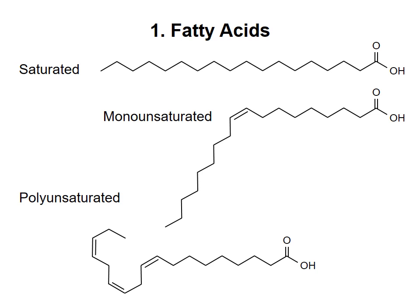Although chemists count the carbons in a fatty acid from the carboxylic acid end, in nutrition literature the carbons are often counted from the methyl, or CH3, end. This terminal carbon can be referred to as the omega carbon, and a fatty acid with a double bond three carbons from the end, such as the one shown here, is referred to as an omega-3 fatty acid. Fatty acids are sources of energy and are structural components of more complicated lipids.